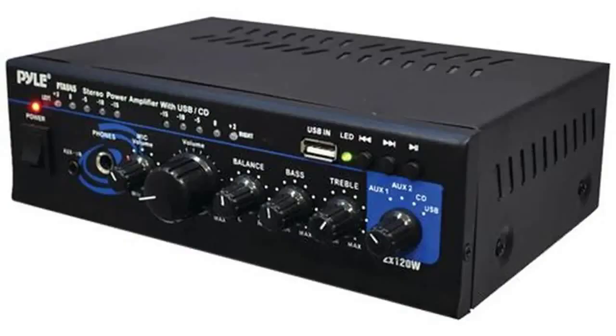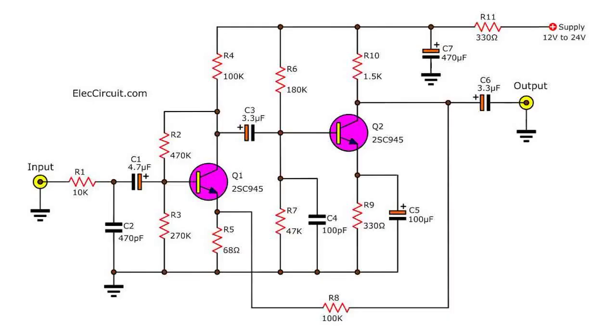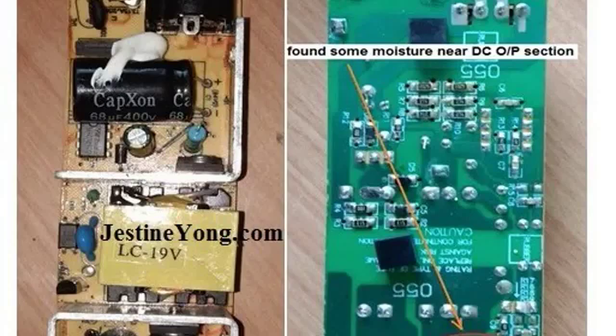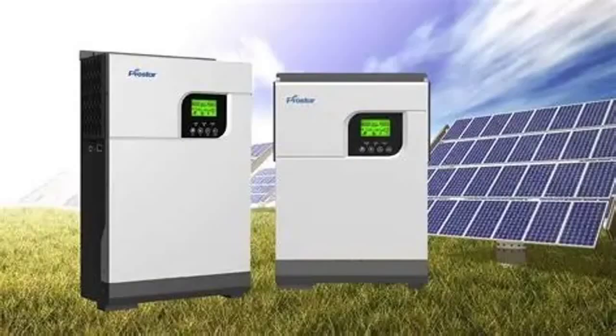BJTs are commonly used in audio and RF amplifiers, analog circuits, and low-frequency switching where linearity and signal quality are most important. MOSFETs are dominant in power electronics such as laptop chargers, DC-DC converters, and solar inverters, high-speed switching in digital circuits, microprocessors and integrated circuits, and motor drives.